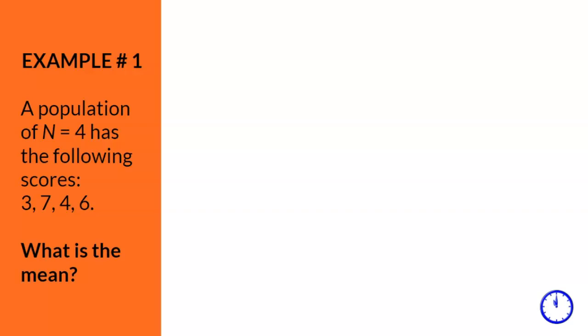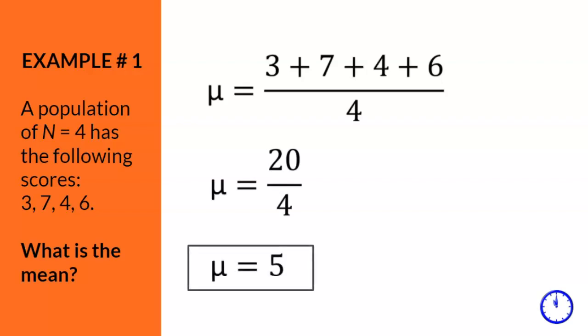Since the problem states population, we should use mu. In other words, we're going to add 3 plus 7 plus 4 and 6 and then divide by 4. This gives us mu equals 20 divided by 4, which then gives us mu equals 5.